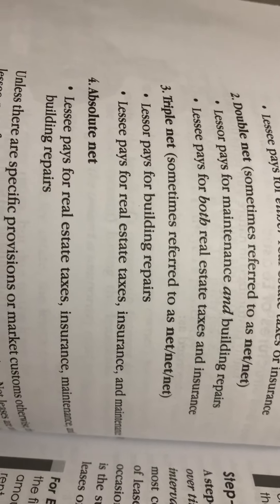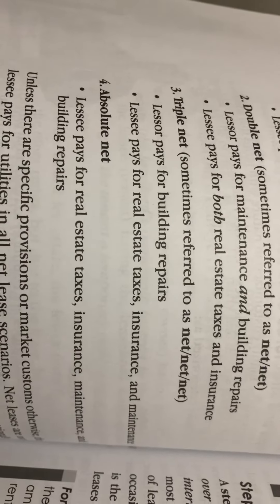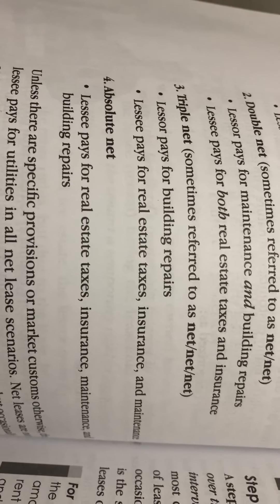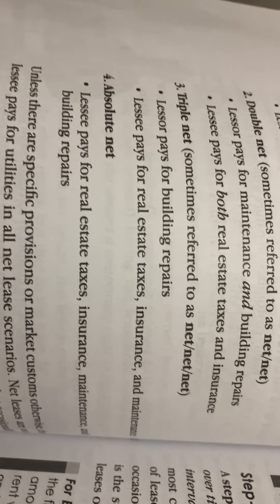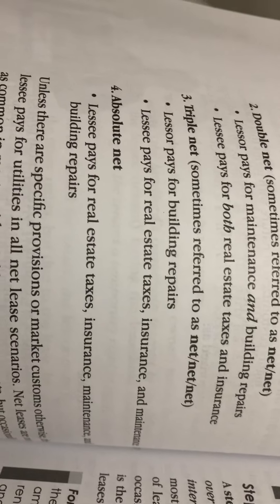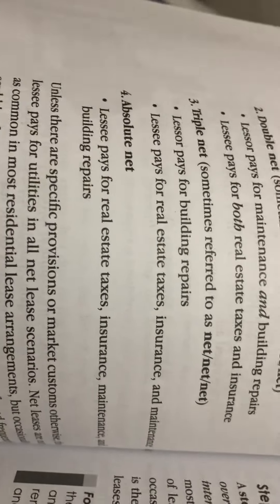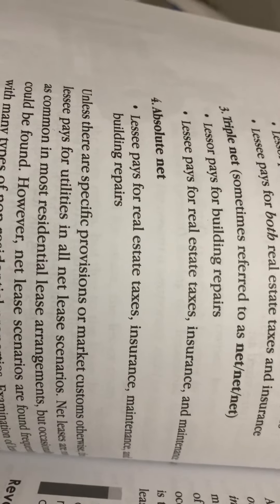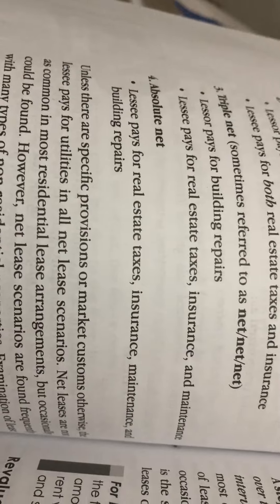Three, triple net — sometimes referred to as net/net/net. The lessor pays for building repairs. The lessee pays for the real estate taxes, insurance, and maintenance.